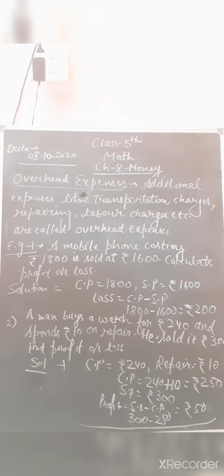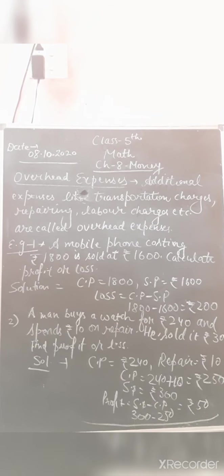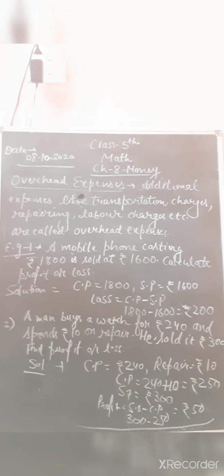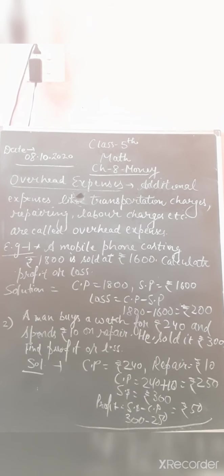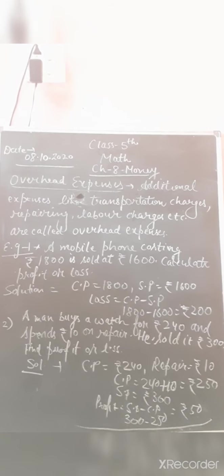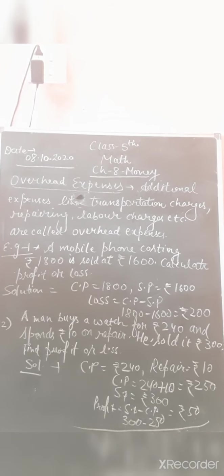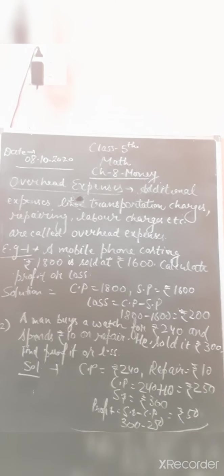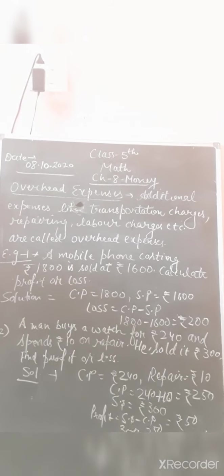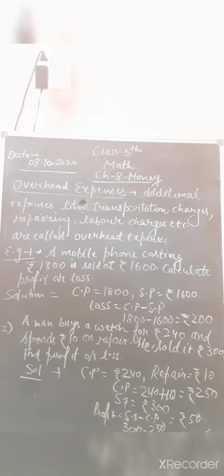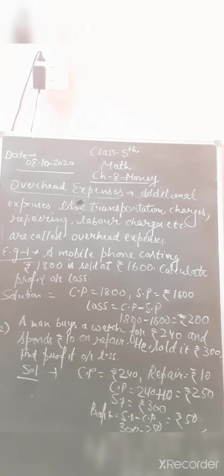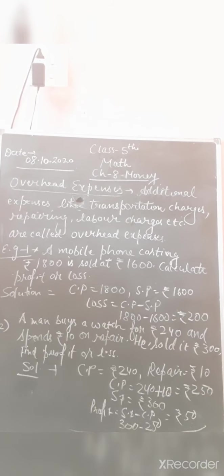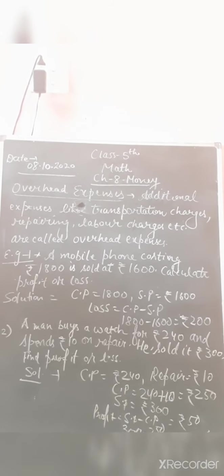Example two: a man buys a watch for 240 rupees and spends 10 rupees on its repair — find profit or loss. Whenever any expense is there, it is included in the cost price. So total cost price = 240 plus 10 = 250 rupees. He sold it at SP = 300 rupees. Since SP is greater than CP, there is profit. Profit = SP minus CP = 300 minus 250 = 50 rupees profit.